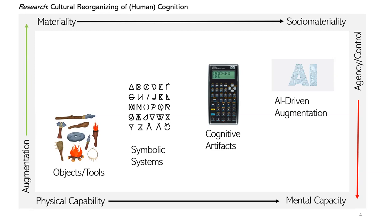One big leap in there is cognitive artifacts — things like a calculator and computer — where we can offload a lot of our cognitive work to these machines. Artificial intelligence is in some ways the next stage of that, where not only can we offload things like calculation, but we can even offload things like decision-making. For better or worse — and where we say for better or worse is where the ethics issues come up — we have systems that can now augment what we do at a very different level than used to be the case.